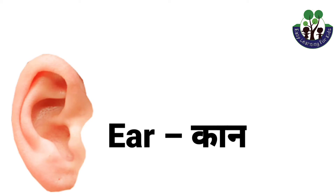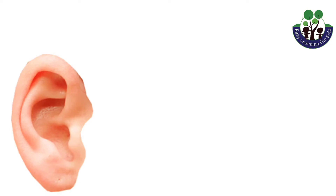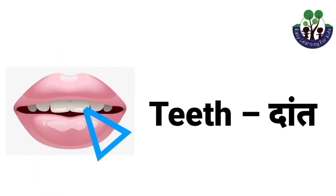Ear. Ear means kaan. Teeth. Teeth means daan.